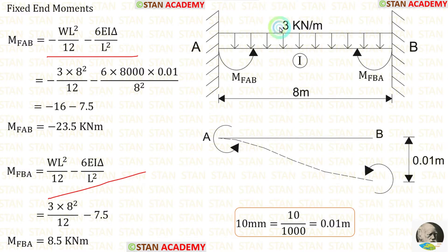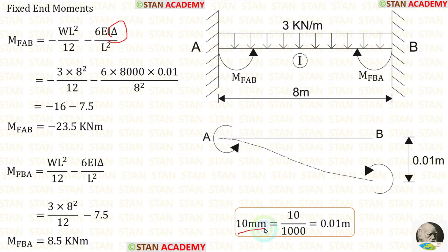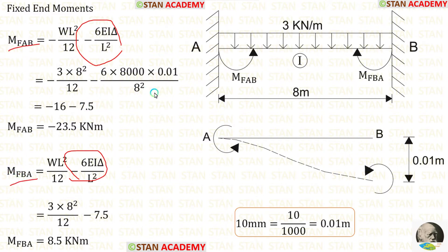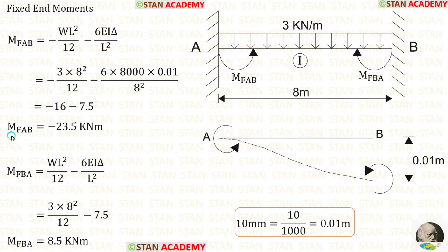Applying the values: W = 3, L = 8, and δ = 10 mm = 0.01 m. The value of EI is 8000 kNm². The fixed end moment due to sinking is the same for both MAB and MBA, so we calculate it once and apply the same value to MBA. After calculations, we get MAB = −23.5 kNm and MBA = 8.5 kNm.